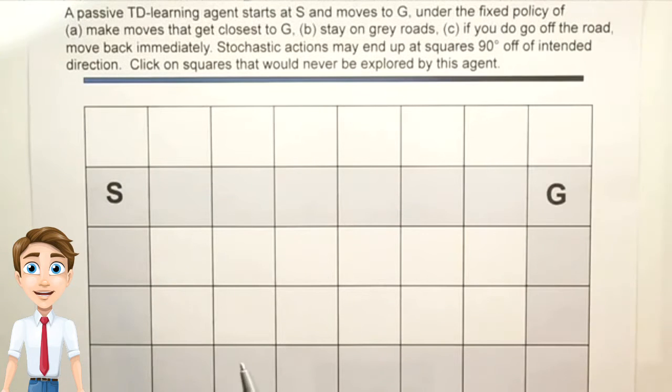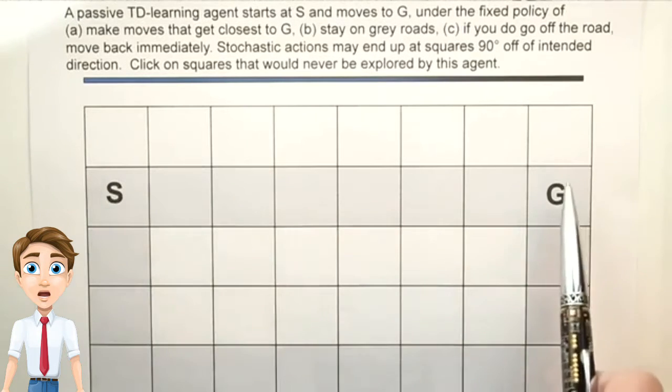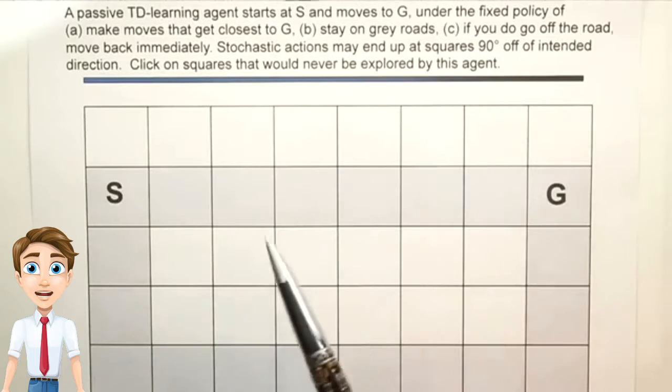In this problem, a passive TD reinforcement learning agent starts at S and moves to G under a fixed policy,